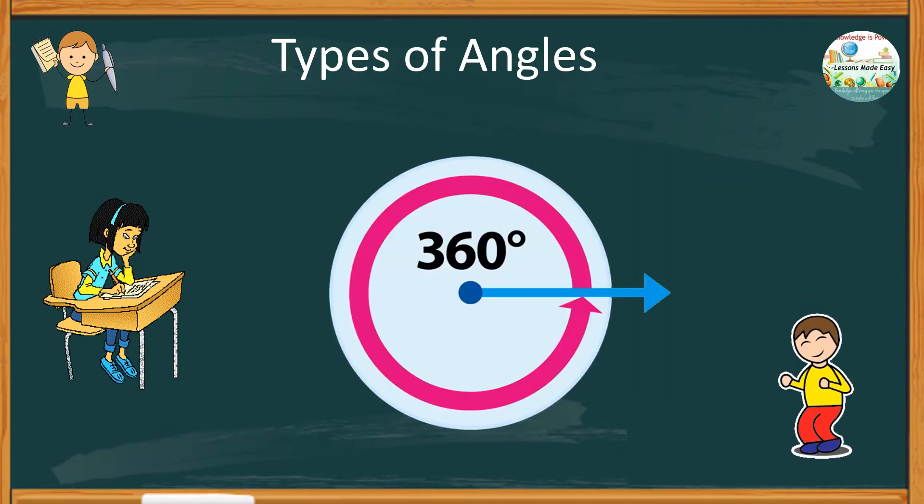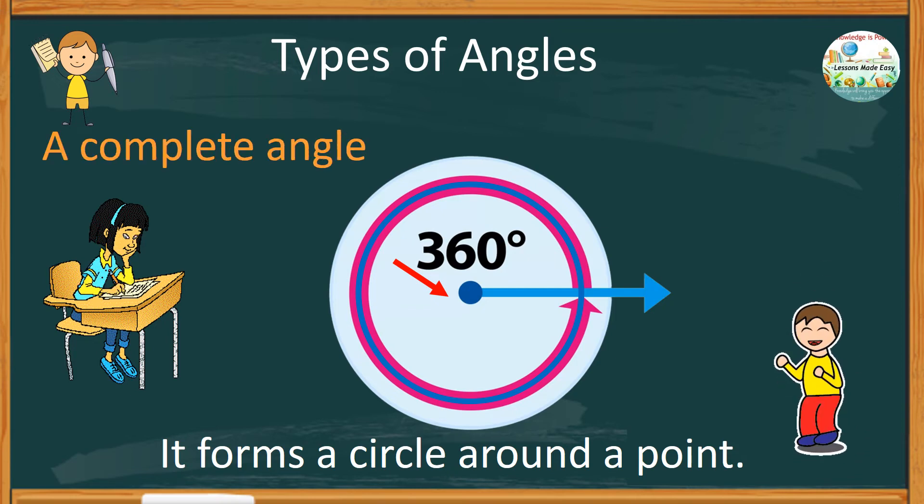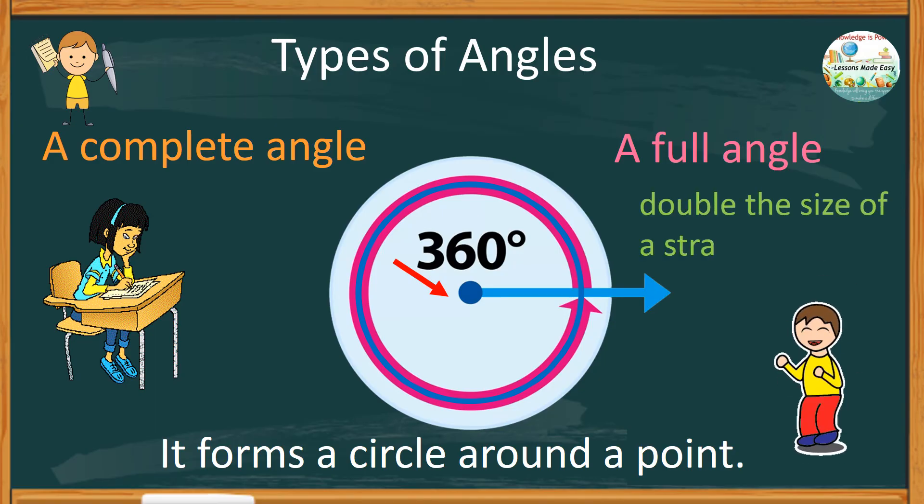Here is the last one. What do you think about this type of angle? If you noticed, it forms a circle around a point. This type of an angle is known as a complete angle. You can also call this a full angle. It is exactly 360 degrees or double the size of a straight angle.